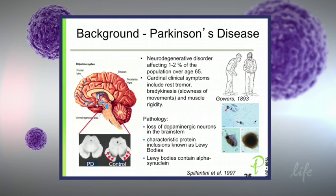It's a neurodegenerative disorder affecting about one to two percent of the population over the age of 65. We see clinically cardinal features of Parkinson's disease, which includes the resting tremor, the slowness of movements, and muscle rigidity. Pathologically, you see a loss of dopaminergic neurons in the brainstem, and what's characteristically pathological are inclusion bodies known as Lewy bodies.